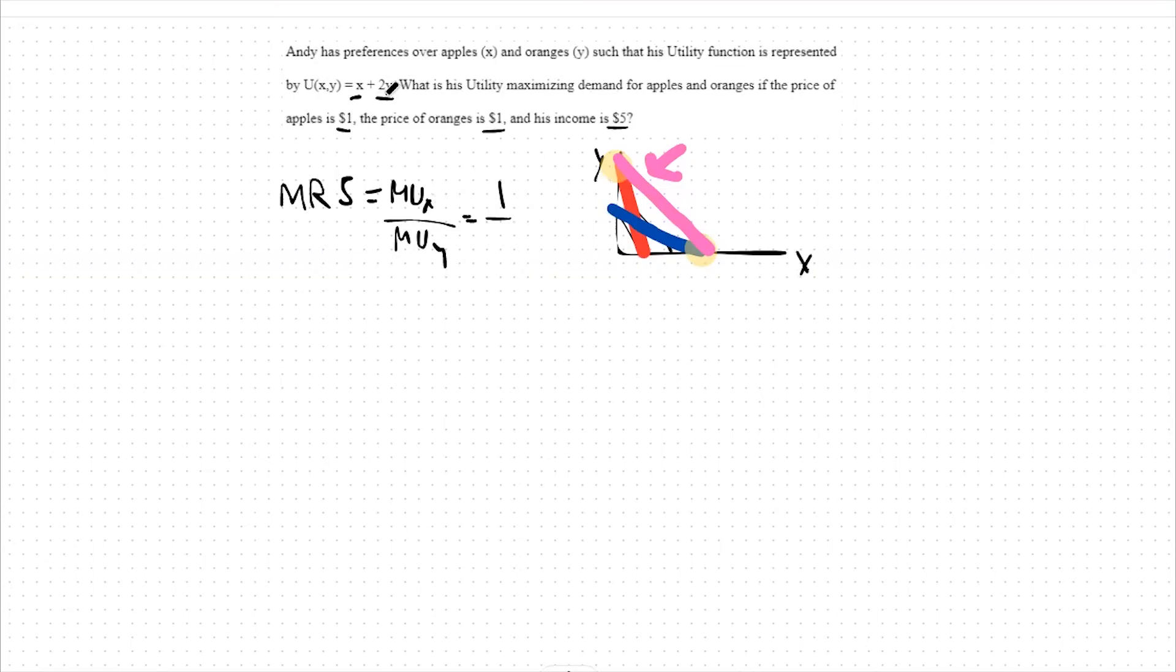Likewise, the partial derivative with respect to good y is 2. Hence, our marginal utility of good y is 2. This means our marginal rate of substitution between apples and oranges is one-half.